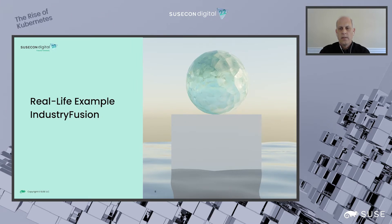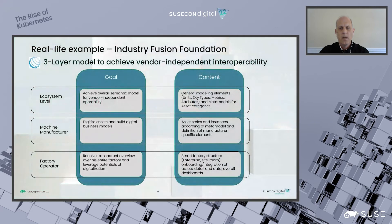To continue our conversation on smart manufacturing and data sovereignty, we will look at a real-life example with the Industry Fusion Foundation. The Industry Fusion Foundation, as their website clearly states, pursues the goal of securing Europe's digital sovereignty and competitiveness in the digital age through intelligent networking for the manufacturing industry. To achieve that goal, the foundation is furthering the development of the open-source, vendor-agnostic solution called Industry Fusion for the networking of smart factories and smart products.